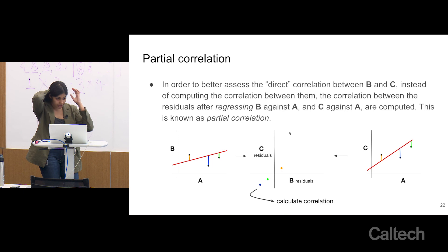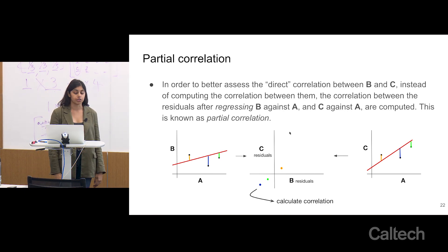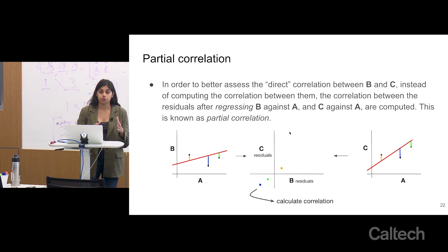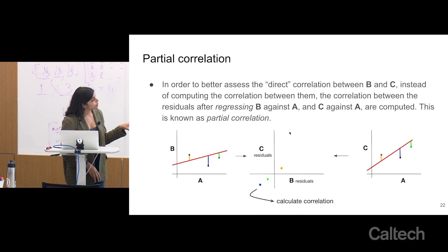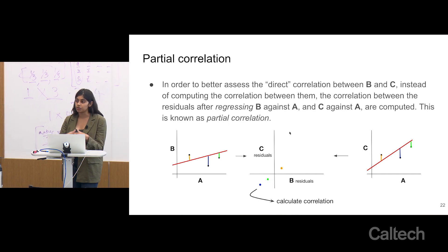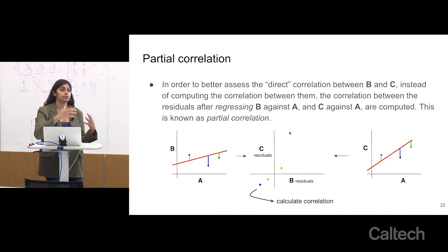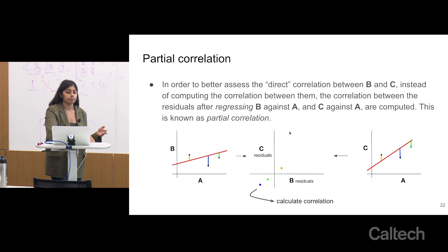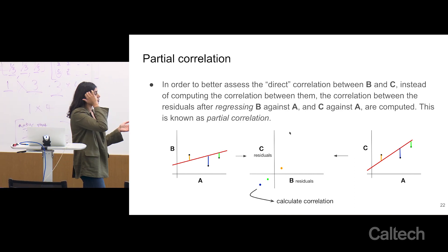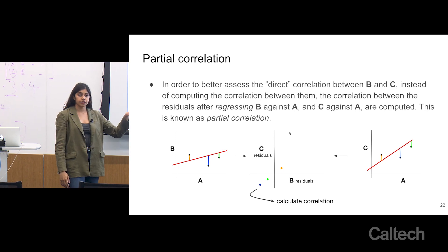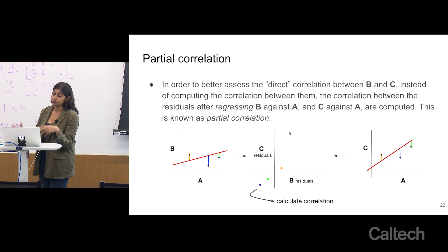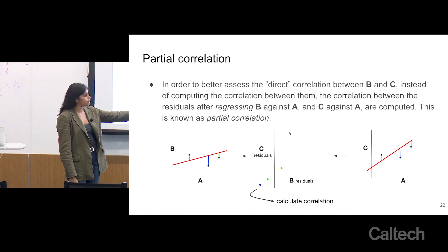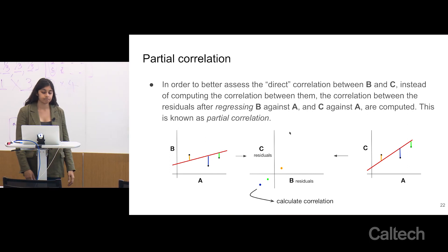A cool extension of correlation is partial correlation. You want to know the relationship between two variables B and C, but there is some other variable A that you want to account for. For example, you want the relationship between education and income but want to regress out the effects of age. Partial correlation does this by regressing B against A and C against A, taking the residuals of those models — what is not explained — and then computing the correlation between the residuals of C and B.